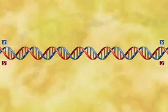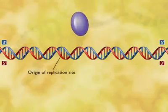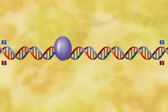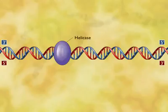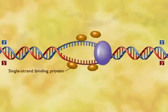DNA replication begins at a specific point in the DNA molecule called the origin of replication site. Initially, the enzyme helicase unwinds and separates a portion of the DNA molecule, after which single-strand binding proteins react with and stabilize the separated single-stranded sections of the DNA molecule.